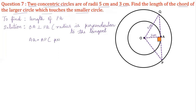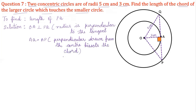AQ equals AP because the perpendicular drawn from the center bisects the chord. So if we find the length of AQ, then the length of AP will also be known since AP equals AQ. It is enough to find the length of AQ. Consider right angle triangle OAQ — in it we have the lengths of OQ and OA, so we can find AQ by applying the Pythagoras theorem.